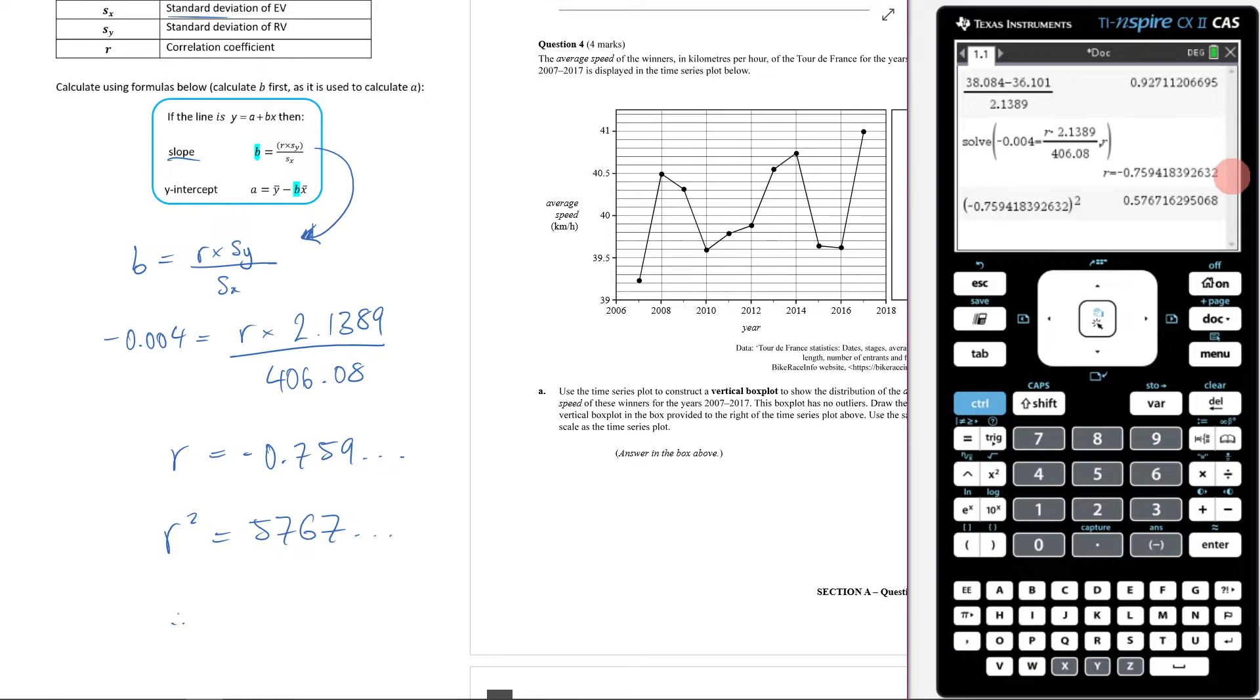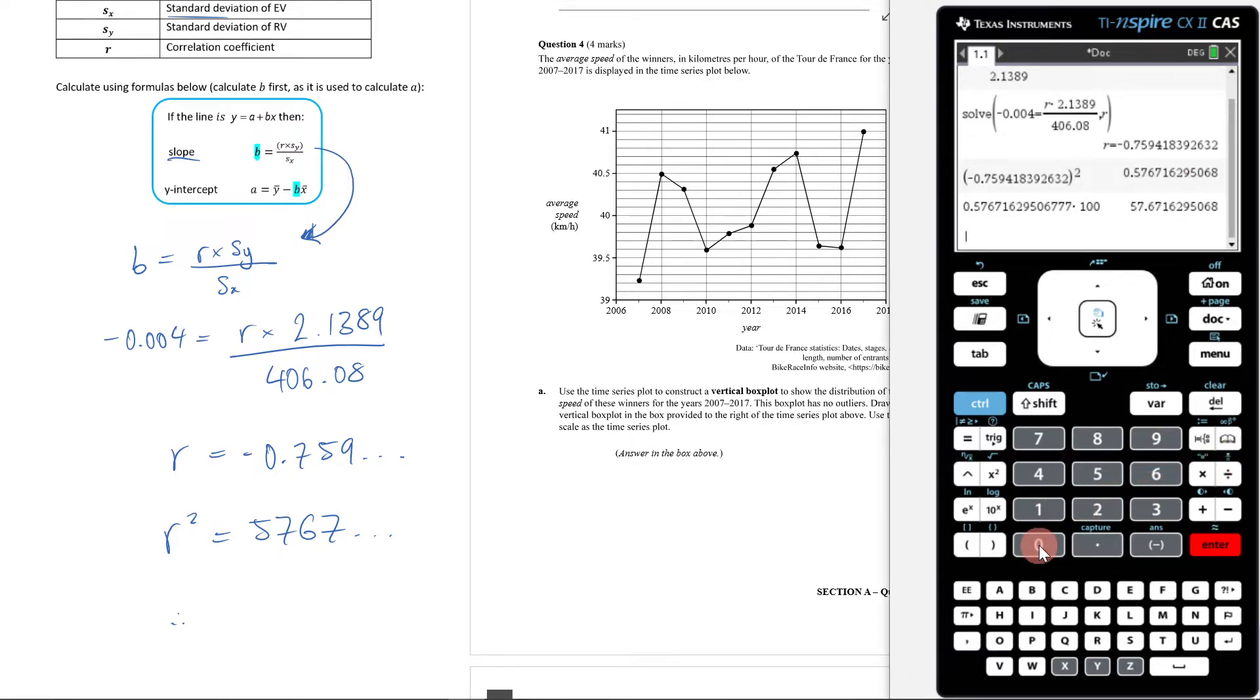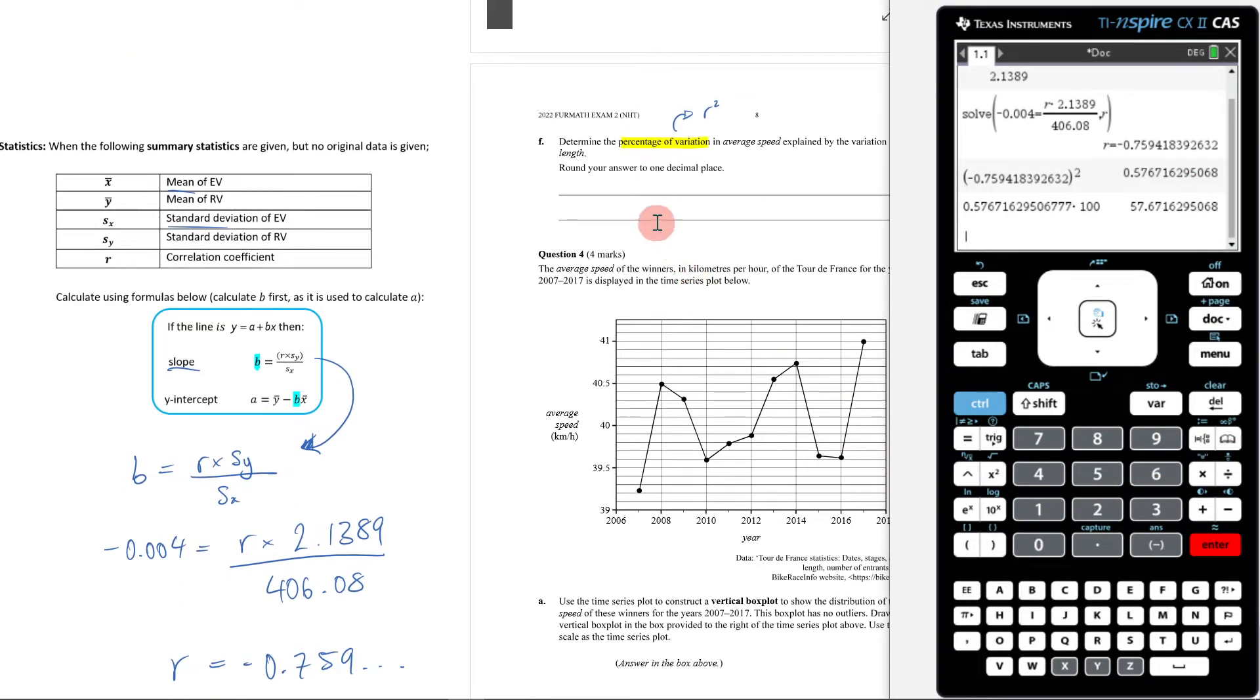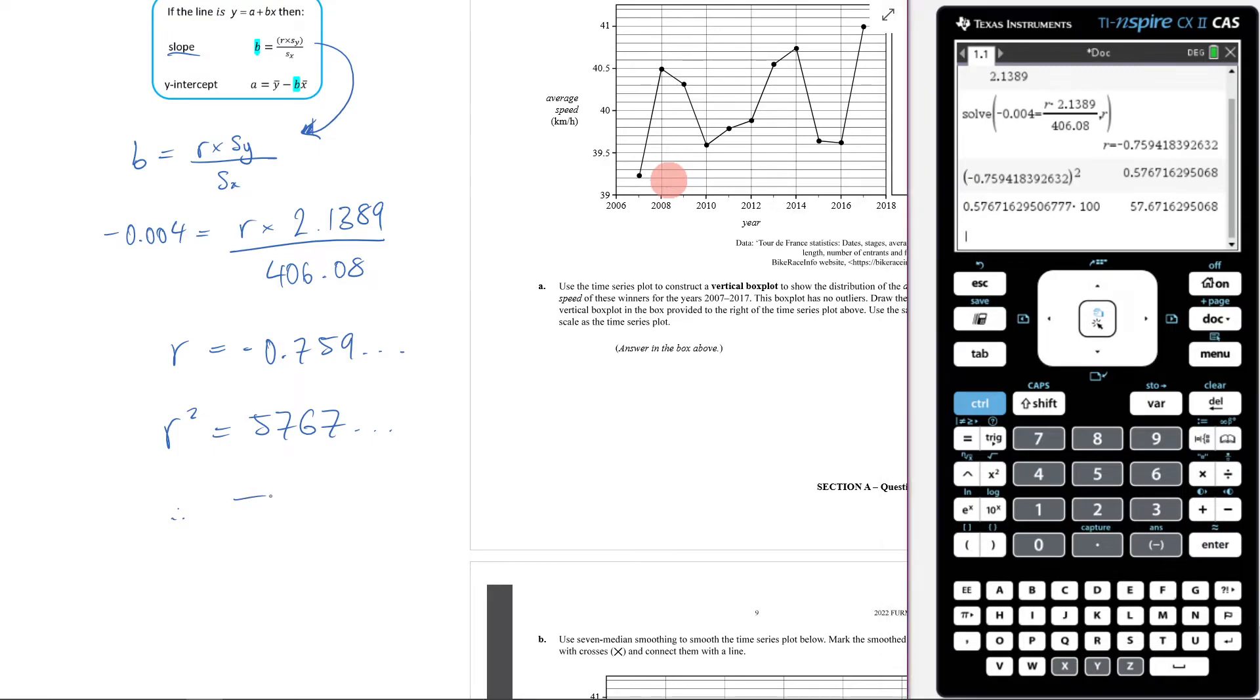Therefore, in order to get this to a percentage, I would now take it, times it by 100. And now I need to round this also to one decimal place. So it's going to be 57.7%.